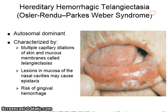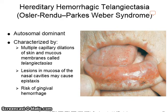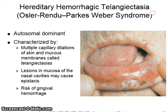Hereditary hemorrhagic telangiectasia, or Osler-Weber-Rendu disease, also known as Osler-Rendu-Parks-Weber syndrome, is characterized by multiple capillary dilations of the skin and mucous membranes called telangiectasias. Lesions in the mucosa of the nasal cavities may cause epistaxis, or nosebleeds. There is also risk of gingival hemorrhage.